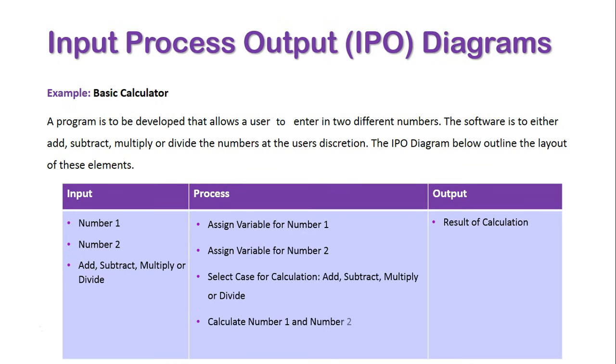I need to assign a variable for number one, assign a variable for number two. I need to select a case for the calculation to add, subtract, multiply, or divide. I then need to calculate whatever was selected on number one and number two. As a result, the calculation needs to be displayed, which leads to the output of the user getting the result of the calculation.